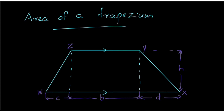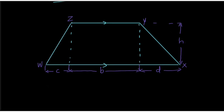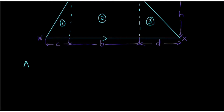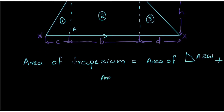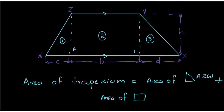Here it is not the same shape. The first one is a triangle, the second one is a rectangle, and the third one is a triangle. So the area of trapezium is equal to the area of triangle AZW, plus the area of rectangle ZYAB, plus the area of triangle BYX.